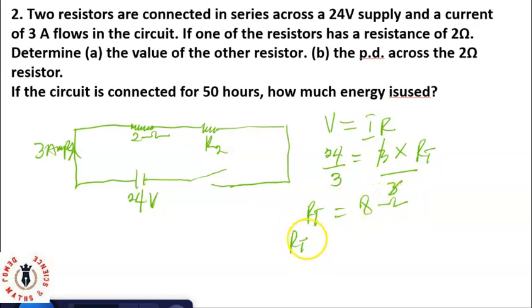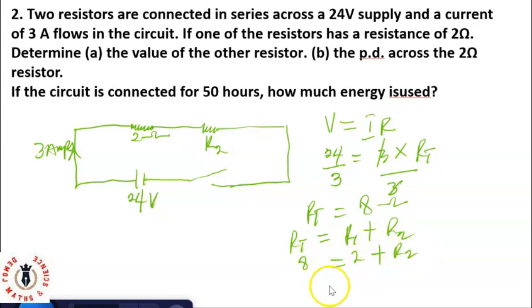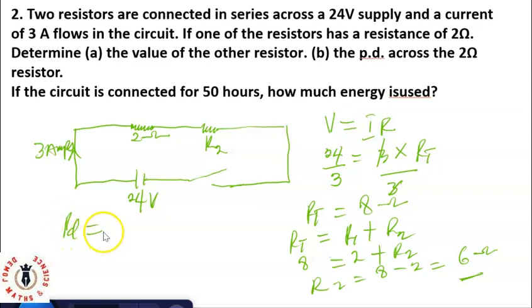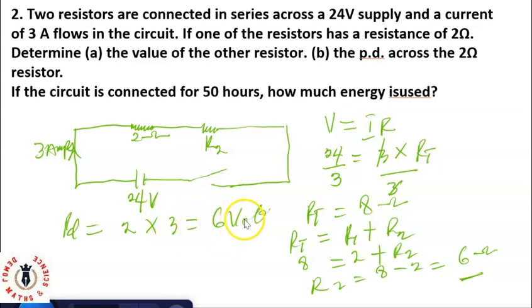Since R-total equals R1 plus R2, we have 8 equals 2 plus R2, so R2 equals 6 ohms. The other resistor is 6 ohms. The potential difference across the 2-ohm resistor is V equals IR, which is 2 times 3, giving 6 volts.